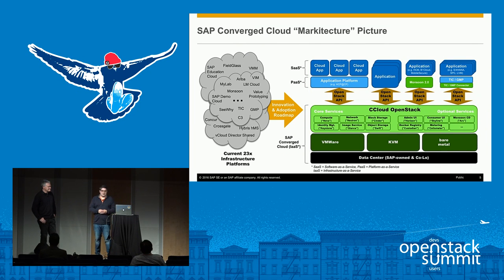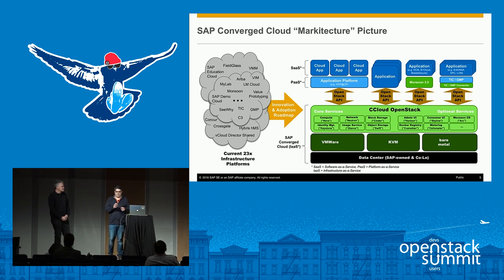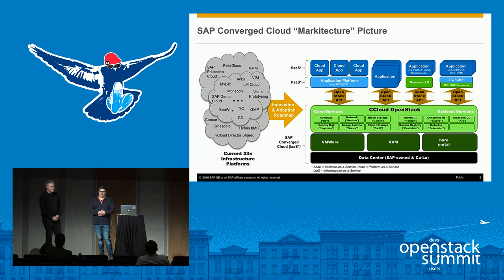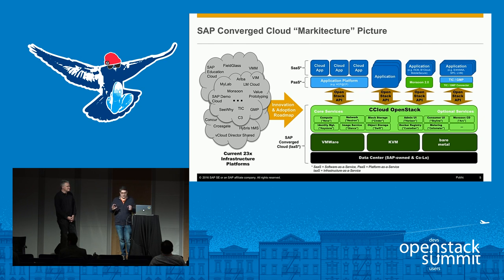SAP has a lot of internal clouds — more than 20 internal clouds, somehow self-written and self-maintained. There was a decision that we move all these little clouds to OpenStack as an API contract. All these little clouds, and maybe some of them are really huge, do have special requirements and orchestrate different kinds of virtualization. OpenStack needs to support a lot of those workloads for us.